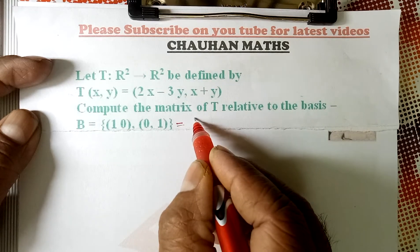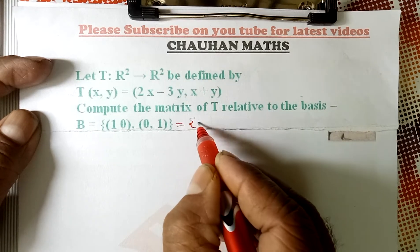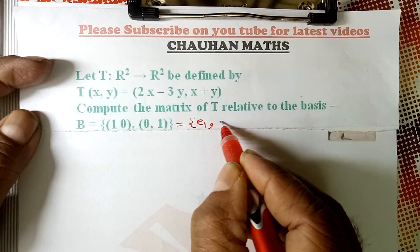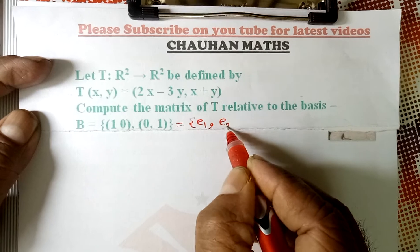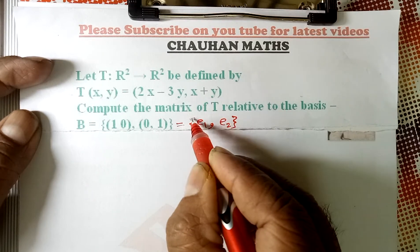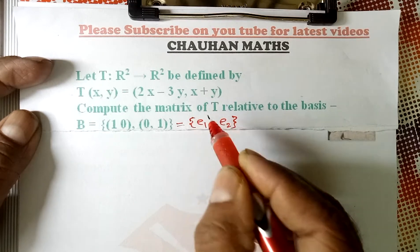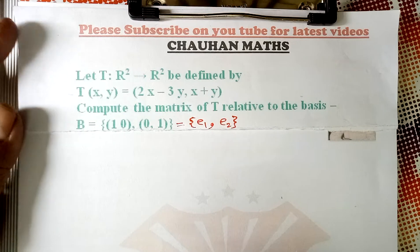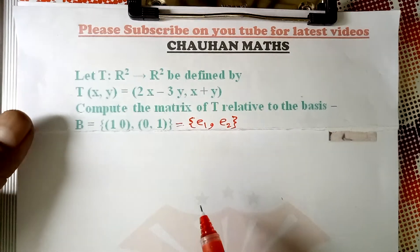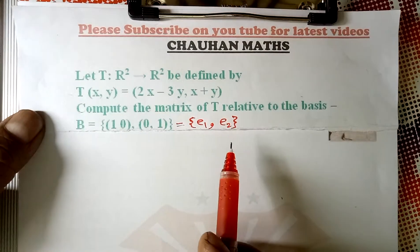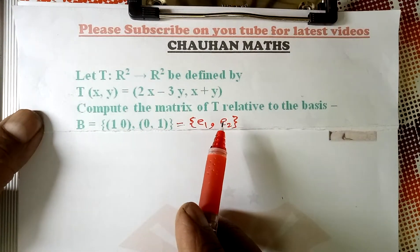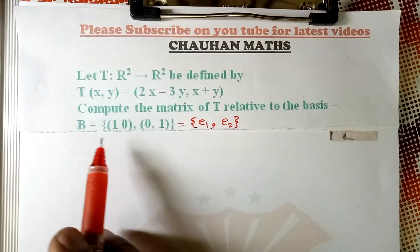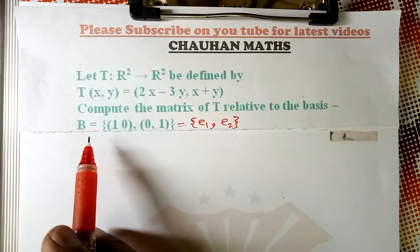In this question, the basis given is the standard basis of R². This is also called E1 and E2. The first element is known as E1, the second element is known as E2. And we have to find the matrix of T relative to basis B.